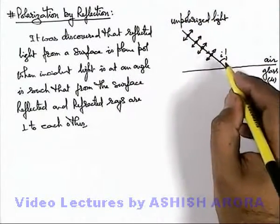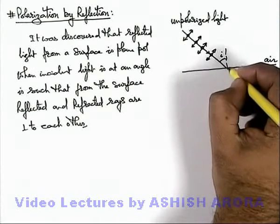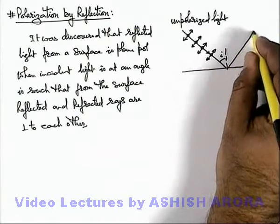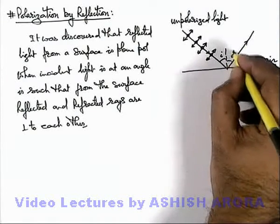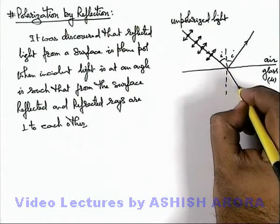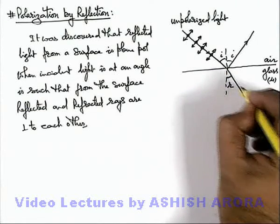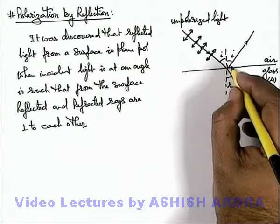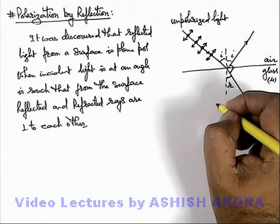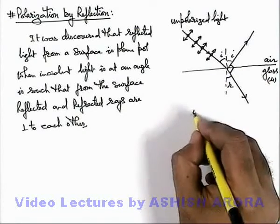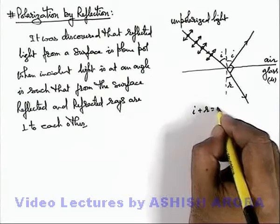Now if this angle is chosen such that the reflected ray, which is reflected at the same angle i, and the refracted ray at angle r are mutually perpendicular to each other, that means the value of i plus r equals π/2.